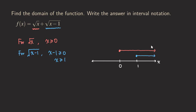Make sure when you draw the arrows, don't draw them too short or you won't be able to see the overlapping region. The best way is to draw them all the way so the arrows line up at the same spot. Then you can see that this is the part where the two domains overlap — and that is the domain for our function.